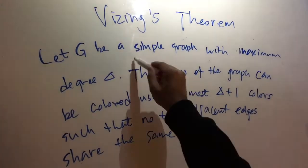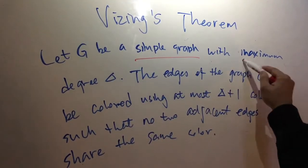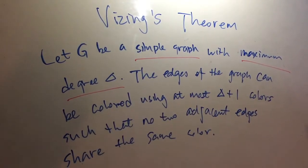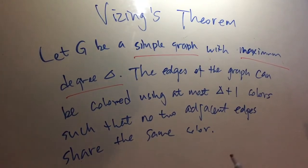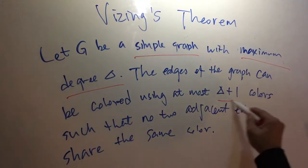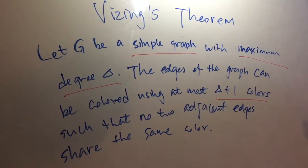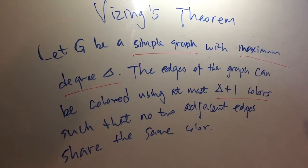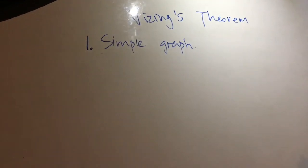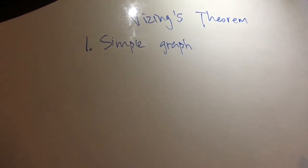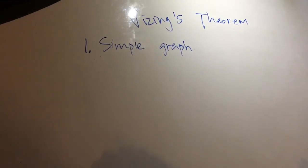Let G be a simple graph with maximum degree delta. The edges of the graph can be colored using at most delta plus one colors, such that no two adjacent edges share the same color. Let me go through some basic terms in this theorem.